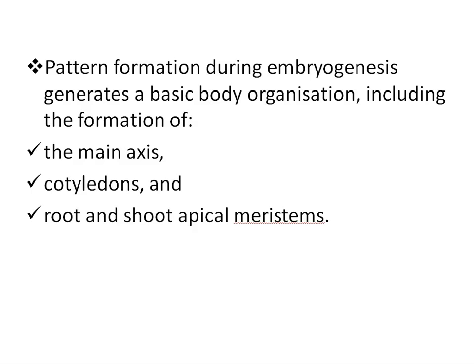Pattern formation during embryogenesis generates a basic body organization, including the formation of the main axis, cotyledons, and root and shoot apical meristems. One of the first patterning events after fertilization is setting up the apical-basal axis of the zygote. The apical pattern comprises the generation of cotyledons and shoot apical meristem, and the basal domain comprises the hypocotyl, the radicle, and the primary root meristem.